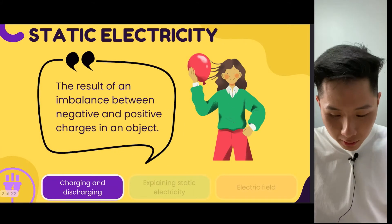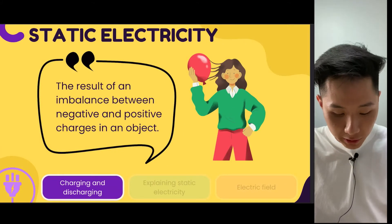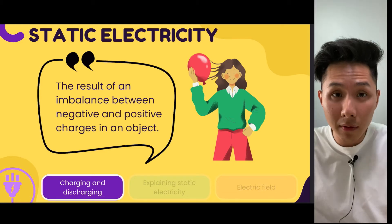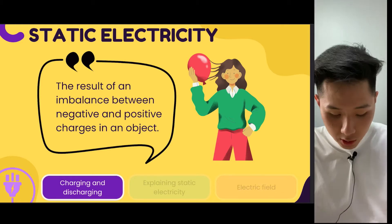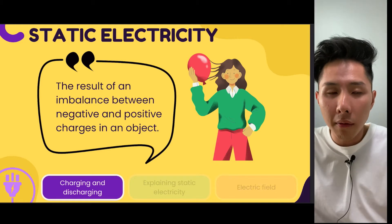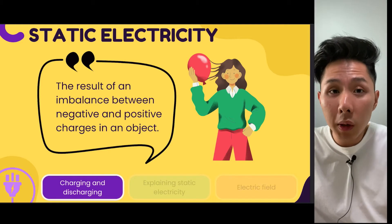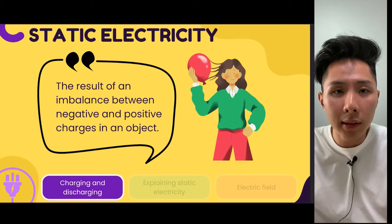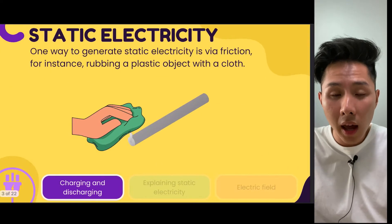Static electricity is the result of an imbalance between negative and positive charges in an object. But first and foremost, how do we create an imbalance of charges in an object?